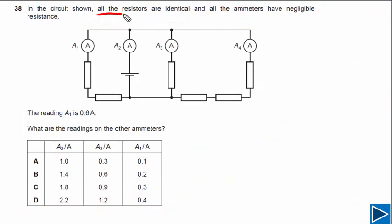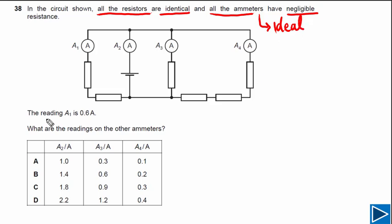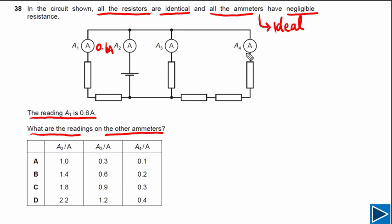For this question, it is given that all the resistors are identical — meaning they have the same resistance — and all the ammeters have negligible resistance, meaning they are ideal ammeters with no resistance. The question also tells us that the reading on ammeter A1 is 0.6 amps. We need to find the readings on A2, A3, and A4.